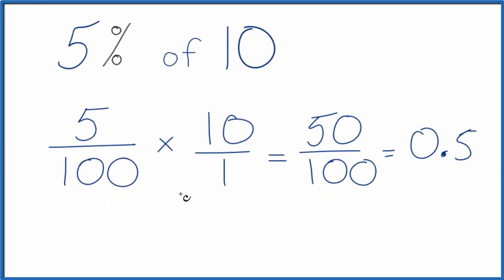The other way to think about this is that 5 divided by 100, that's 0.05. We could just multiply that times 10. We do that, we get 0.5.